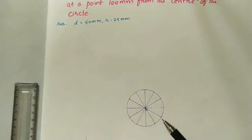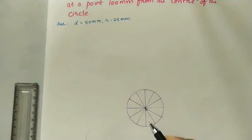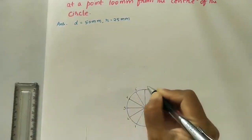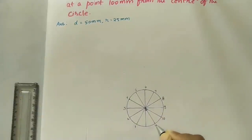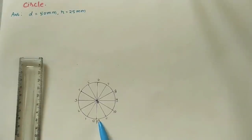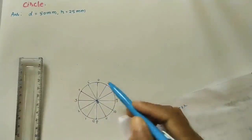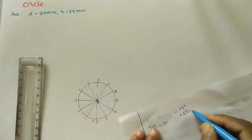Here we have divided the entire circle into 12 equal divisions; each division angle is 30 degrees. Mark the intersection points — starting from here, this is the first point, second, third, fourth, fifth, sixth, seventh, eighth, ninth, ten, eleven, and this is the twelfth one. I am taking this twelfth point as P, the initial point.